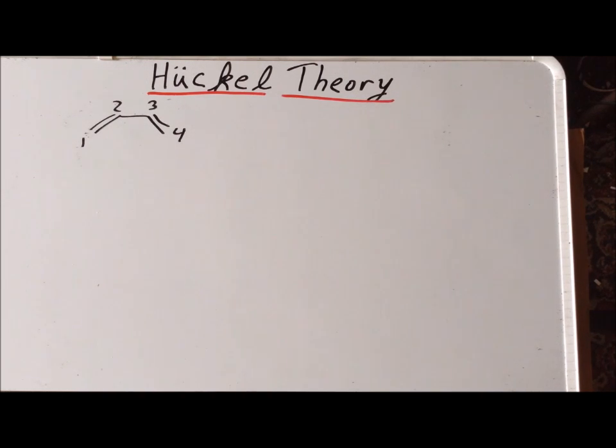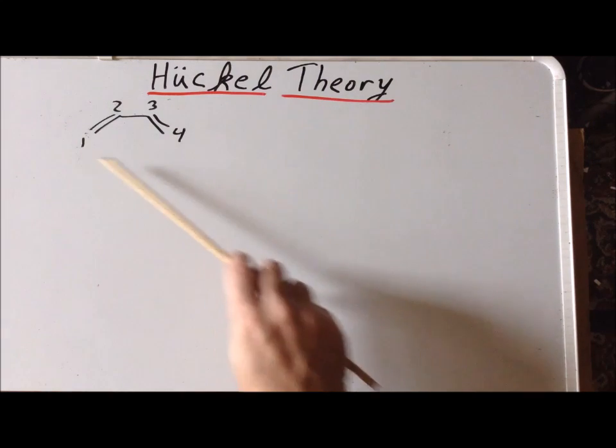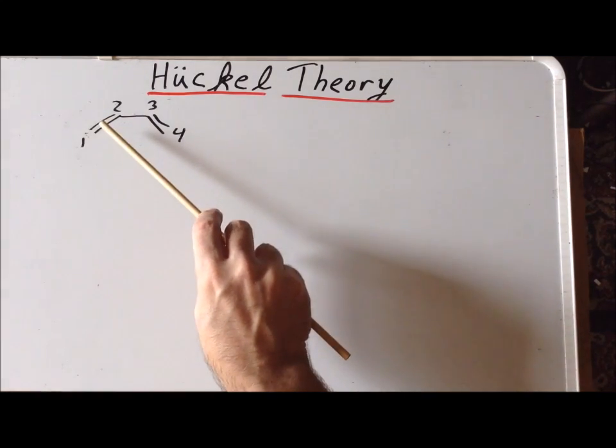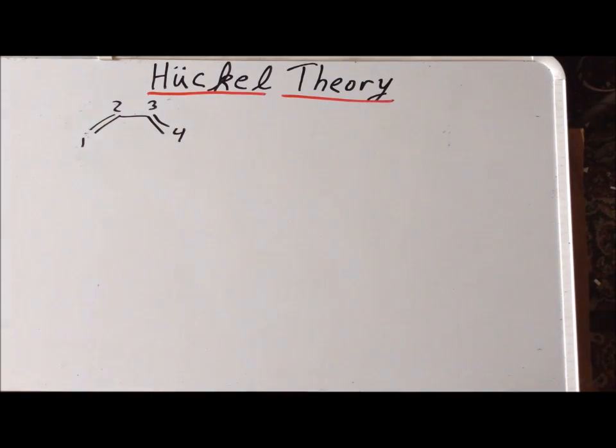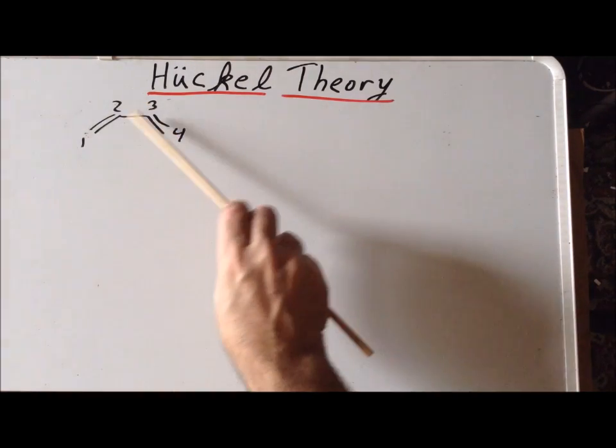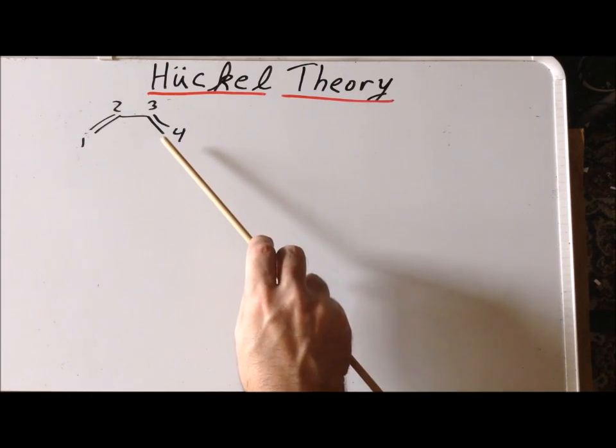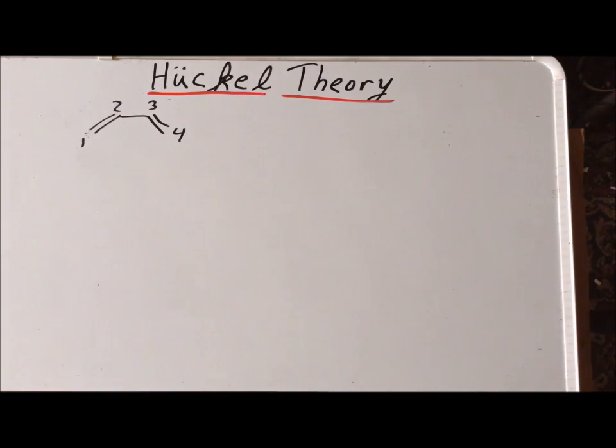Note that the important features of this structure from the point of view of Huckel theory is that atoms one and two are connected, two and three are connected, three and four are connected, but one and three are not connected, one and four are not connected, and two and four are not connected.